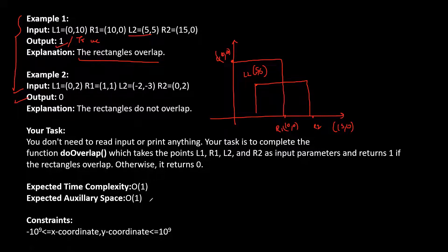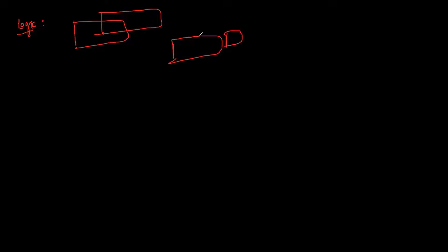We need to make a logic that satisfies O(1) complexity to get the optimized solution. Let's move on to the logic-building part. What the question asks is: we need to check whether the rectangles are overlapping or not. One approach is to consider all the points given and compare them with the second rectangle. Another approach is to check all the scenarios where the rectangle is NOT overlapping. If none of those scenarios is satisfied, then the rectangles are overlapping; if any one is satisfied, they are not overlapping.